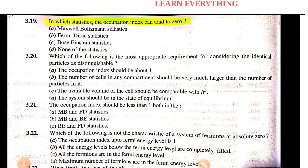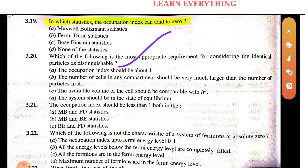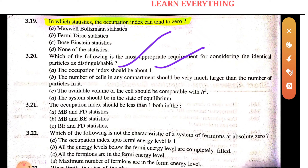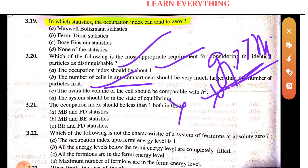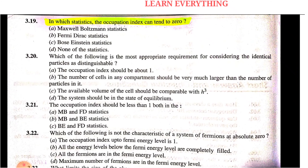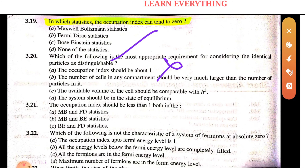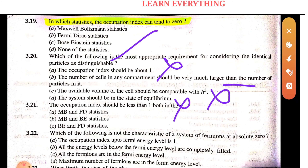Second MCQ: Which of the following is the most appropriate requirement for considering identical particles as distinguishable? The number of cells in any compartment should be very large compared to the number of particles in it — that is, NI much less than GI.